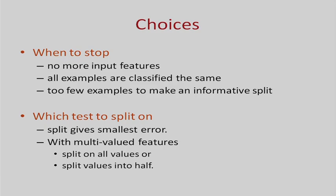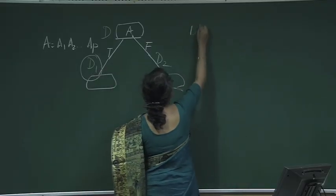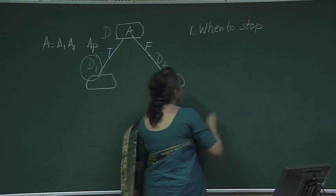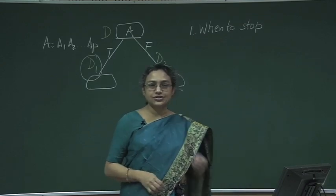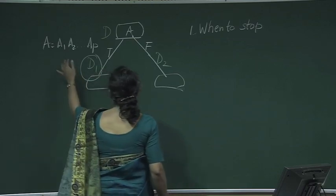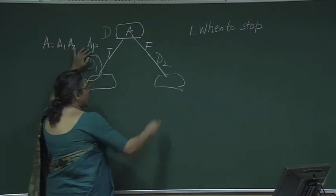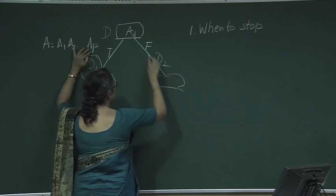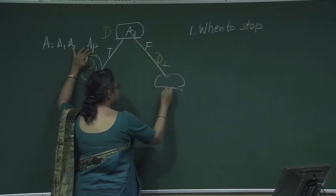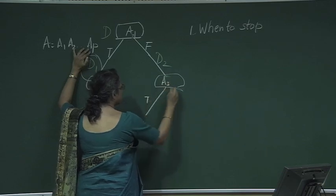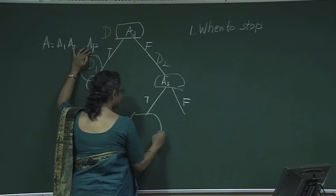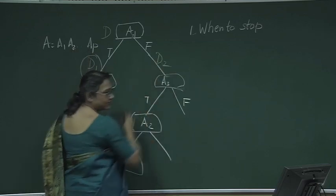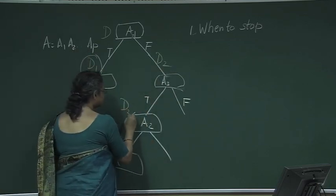Let us see how we take those decisions. First, let us look at the decision about when to stop. There are several cases where we may have to stop. Consider that there are three attributes, and at a particular point suppose we have chosen attribute A1, and based on A1 equal to false we got a split, then chose A3, and based on A3 equal to true we got another split, and here chose A2 and based on A2 equal to true or false we got this split. Suppose we have subsets D2, D2, D3, and D4 at the leaves.